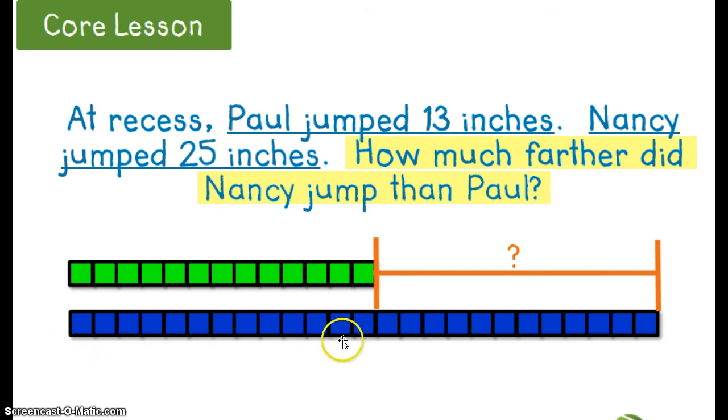The 25 inches that Nancy jumped is indicated here with the blue tiles. So what I need to figure out is the difference between 25 and 13. This here is showing me the difference of how far Nancy jumped than Paul.